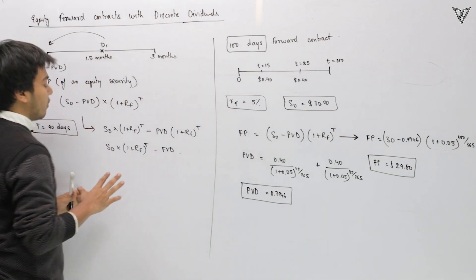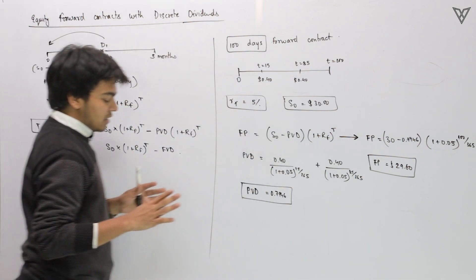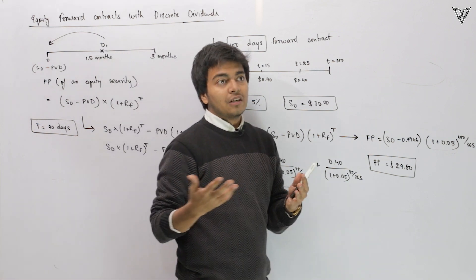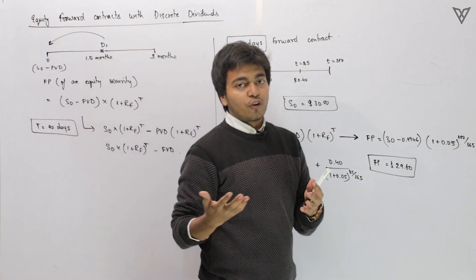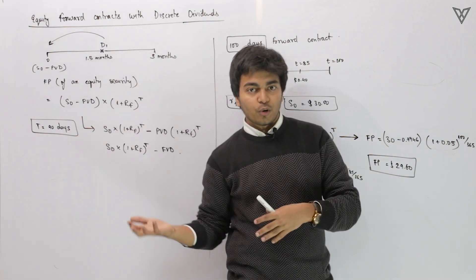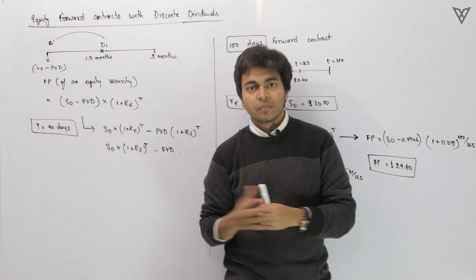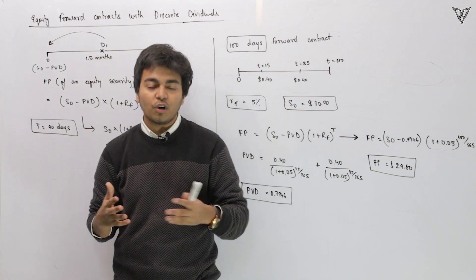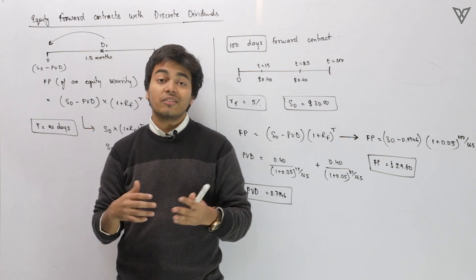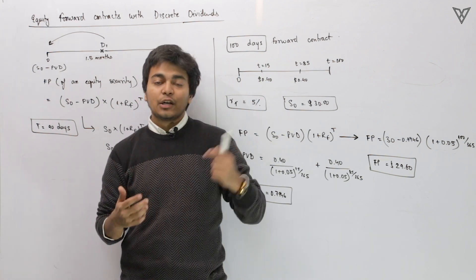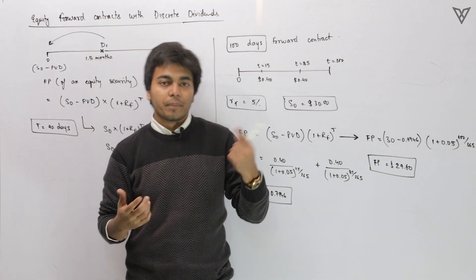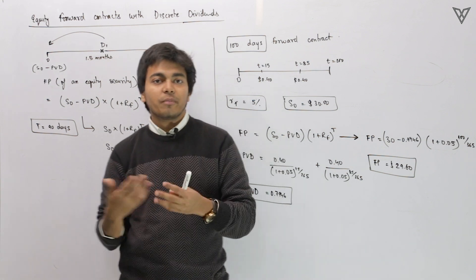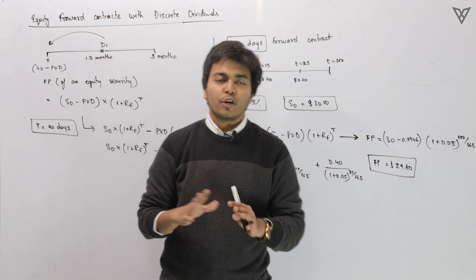Now what we are going to look at is what exactly happens if we relax the assumption of no cost and no benefits. Whenever there are costs involved with the forward contract we add it to the price, and at the very same time whenever there are benefits involved we subtract it.